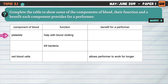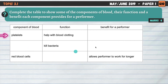Starting with question number one on topic 3.1. If you struggle with any of the questions today, head down to the description. You can find links to my short summary videos containing literally everything you need to know. So if you don't understand a question, head down, watch the relevant video, then come back and attempt it. Complete the table to show some of the components of blood, their function, and a benefit each component provides for a performer. This one's worth four marks and is very easy to answer because the table shows us exactly what we need to include.